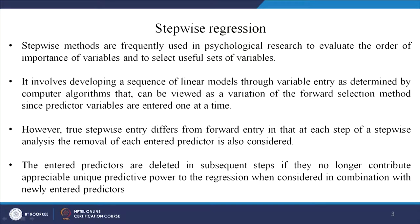Stepwise regression is frequently used in psychological research to evaluate the order of importance of variables and to select a useful set of variables. It determines in which order variables should be entered. The order is important because when I put variables in a haphazard manner, introducing a second variable causes a change in the coefficient of the first variable. So I should always have a logical flow of entering variables. For example, the first variable should be the one with the highest explanatory power.